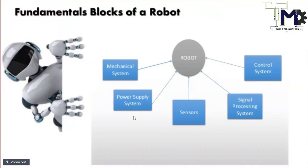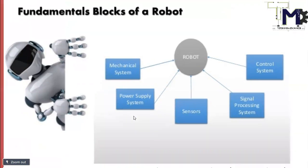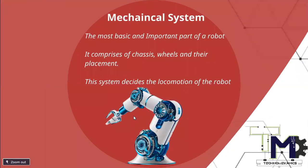A robot consists of a mechanical system, power supply system, sensors, signal processing system, and control system. The mechanical system comprises the chassis, wheels, and their placement — it decides the locomotion of the robot, allowing it to move in any direction. A device that converts electrical energy into mechanical motion is called an actuator. The most popular actuator in the market is the DC motor, which is widely used for the locomotion of a robot.